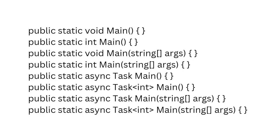String args: the main method takes an array of strings as an argument, and this is typically used to pass command-line arguments to the program.